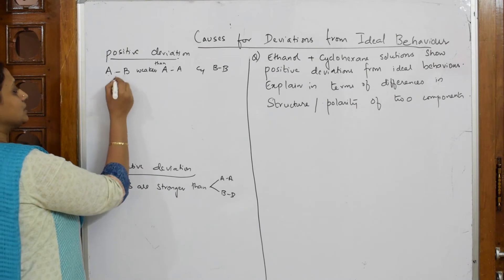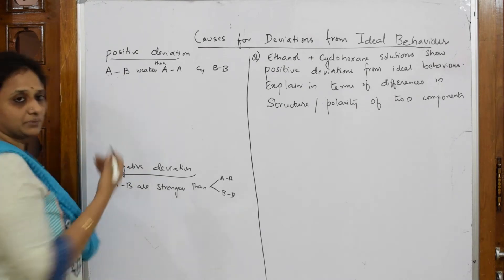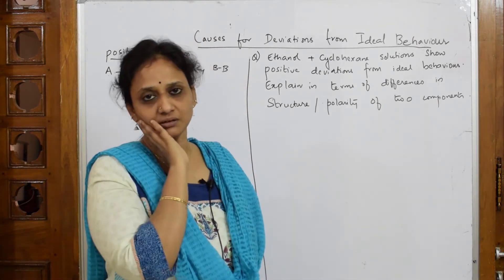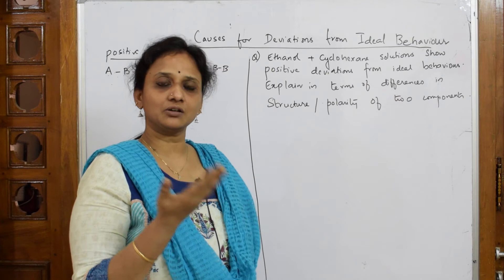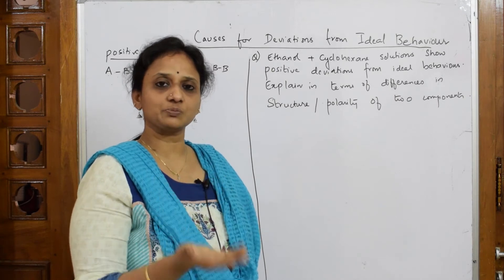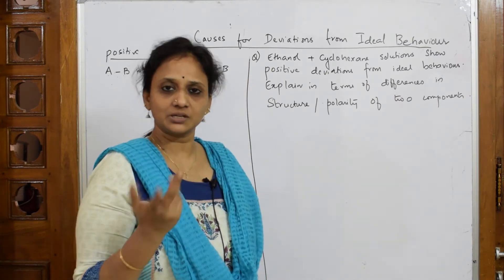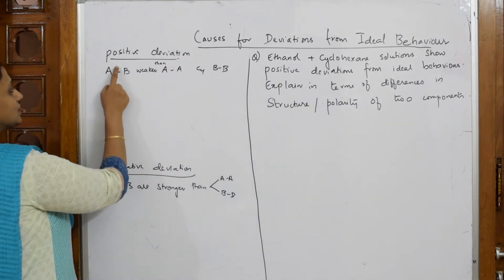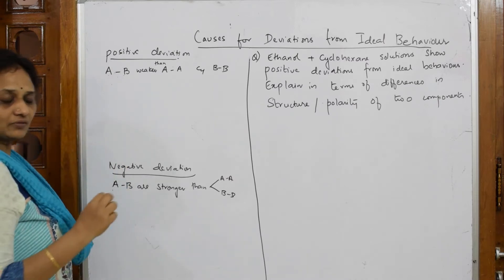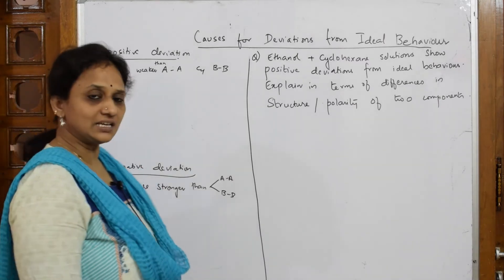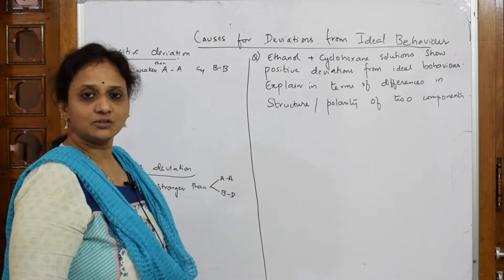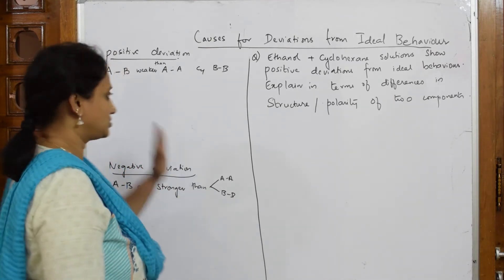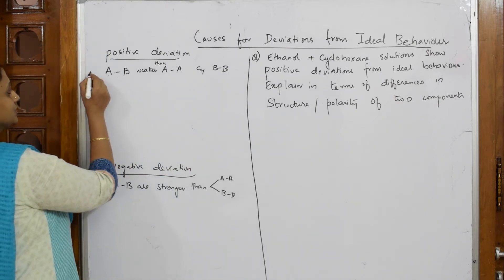If the A-B interaction is weaker, what will happen? Immediately the bond between A and B breaks. When it breaks, the molecules will try to vaporize in the beaker. When they vaporize, it shows positive deviation — that is, deviation above Raoult's law — because the bond is already weaker. The cleavage of the bond is easy, vaporization is also easy, and the vapor pressure value will be higher compared to the ideal solution.